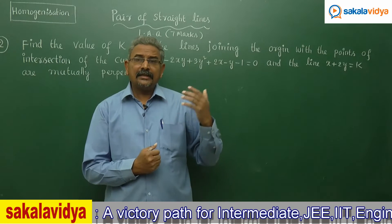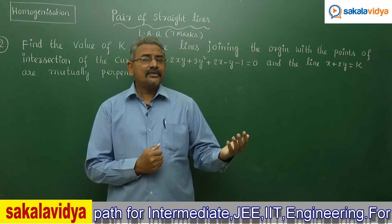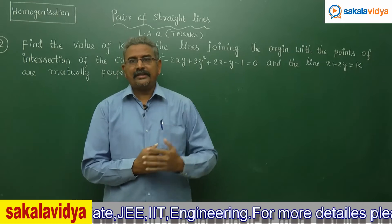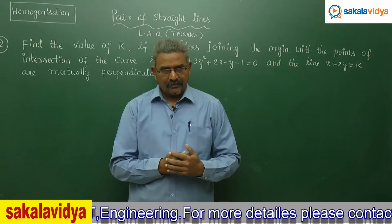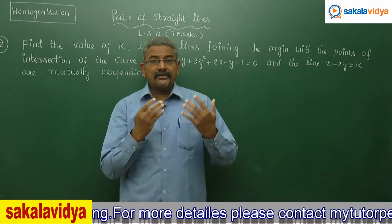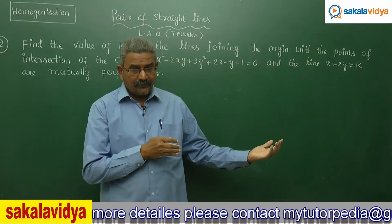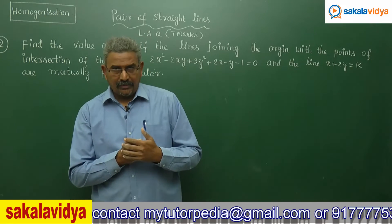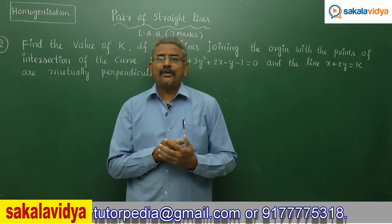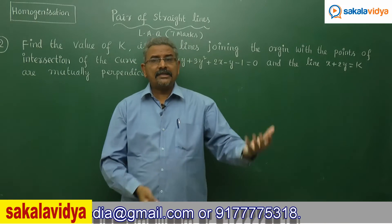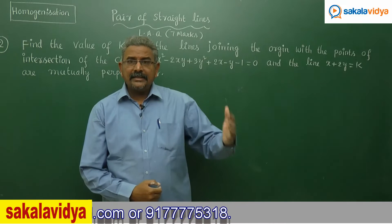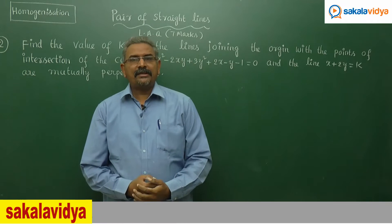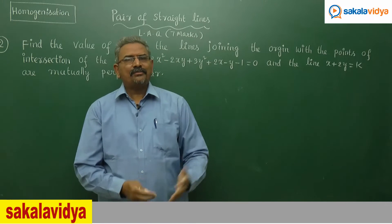Since this represents a pair of straight lines, we can find the angle between them using the cos θ or tan θ formula. If cos θ equals 0, then θ becomes 90 degrees — the pair of lines are mutually perpendicular. The cos θ formula is: the modulus of (A + B) divided by the square root of (A − B)² + 4h². As they are perpendicular, cos 90° = 0, so the modulus of (A + B) divided by that square root becomes 0.